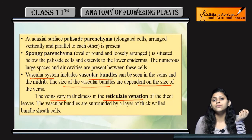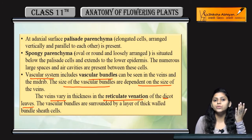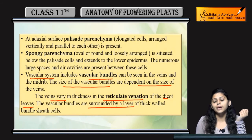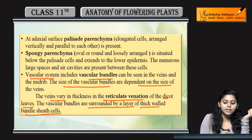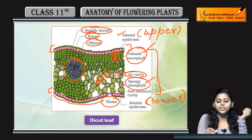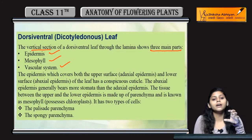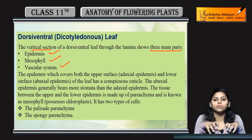In the reticulate venation of dicot leaves — dicot leaves में reticulate, branch-like venation होती है — and surrounded by a thick-walled bundle sheath। Bundle sheath xylem and phloem vascular bundle को surround कर रही थी। So यही था dicot leaf। अब हम further पढ़ेंगे monocot leaf में उसकी anatomy क्या होती है।